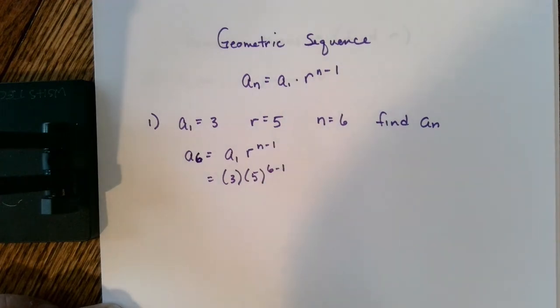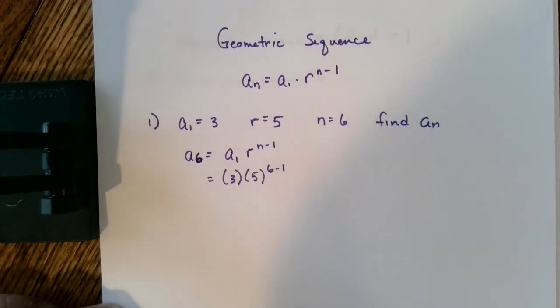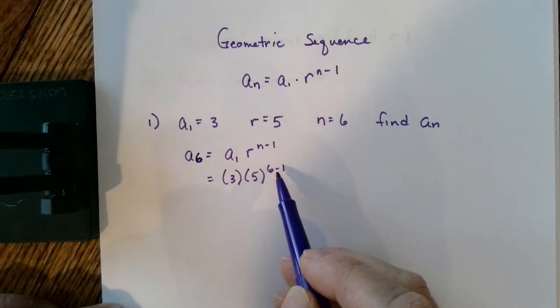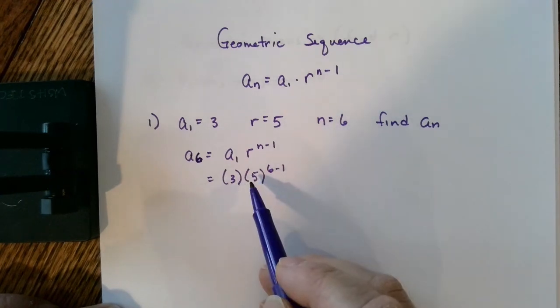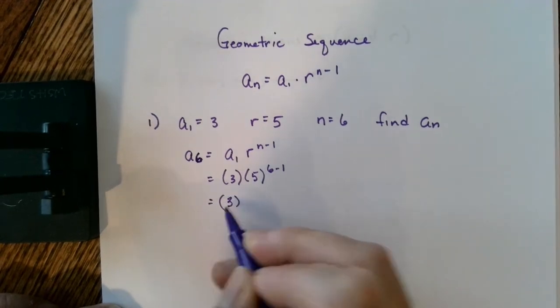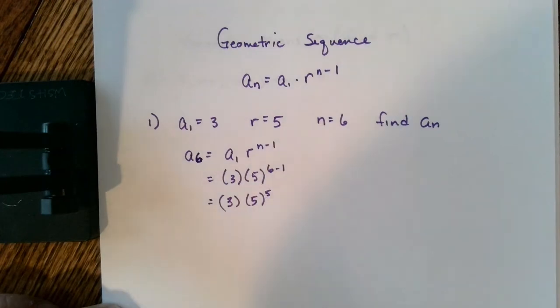Now a very common mistake here is that students will take the 3 and the 5 and they'll multiply that together before dealing with the exponent. But let's remember our order of operations. We got to deal with the exponential expression first before we can deal with the multiplication.